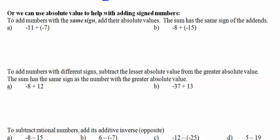We could also use absolute value to help with adding signed numbers. To add numbers with the same sign, add their absolute values. The sum has the same sign that we started with. So we just say, oh, that's 11 plus 7. Since they're both negative, 18. And then since they were both negative, we make it negative 18. Here they're both negatives. So we just say 8 plus 15 is 23. Since they were both negative, the final answer is negative 23. I personally don't recommend that one all that much.